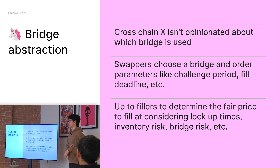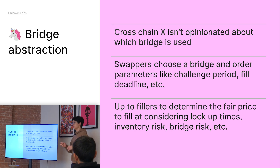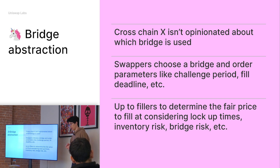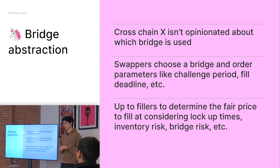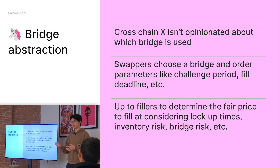Cross-chain X tries to be an abstraction over bridges — there's no inherent bridge baked into the protocol. When a swapper makes their order, they choose a bridge by choosing how the order can be filled, and they also choose different parameters like fill deadline and challenge deadline. It's up to fillers to determine at what point they're willing to fill the order. This is a really great improvement — it allows us to expand interoperability around what protocols we can support without tying ourselves into a single message-passing bridge or native bridge.